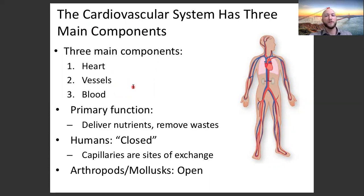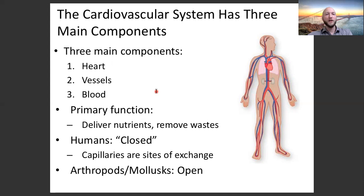Do you remember the functional name for this system? Correct, the circulatory system. So what is the purpose of the cardiovascular system? It's to deliver nutrients and remove waste products. This is the main highway in our body — how we get glucose to our cells, oxygen to our cells, how we move hormones around.